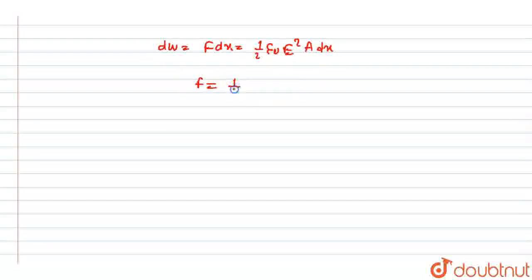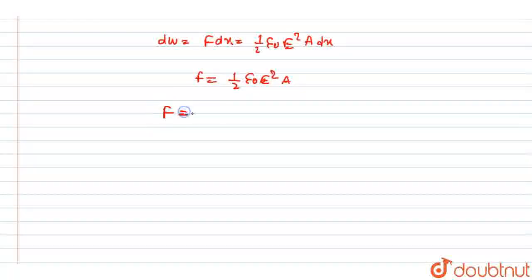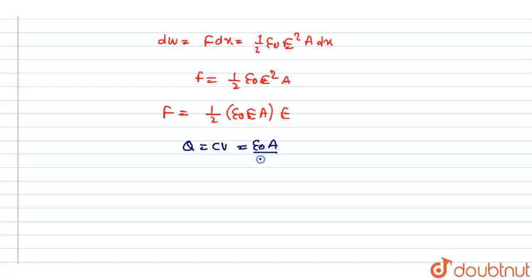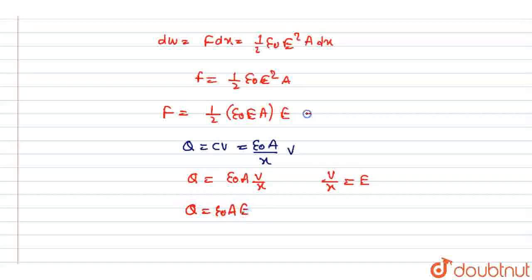Solving this, we get F equal to (1/2)ε₀E²A. We rearrange this as F equal to (1/2)(ε₀EA)·E. Now we know Q equals CV. With C equal to ε₀A/X, and V/X equal to E, we get Q equal to ε₀EA. Calling this equation 1, from equation 1 we can say F equals (1/2)QE.